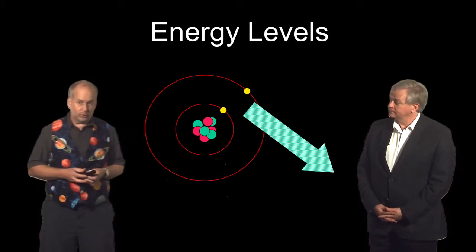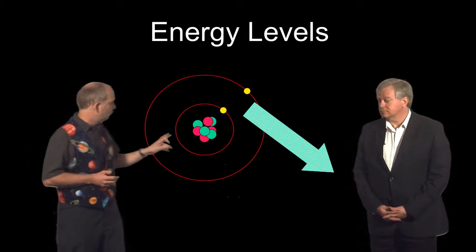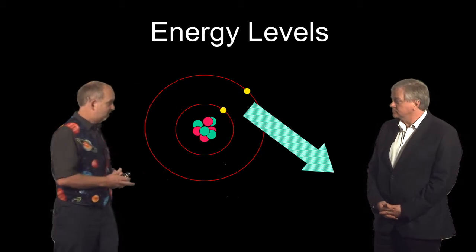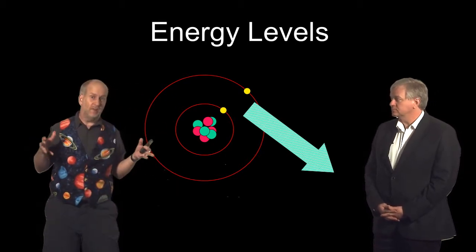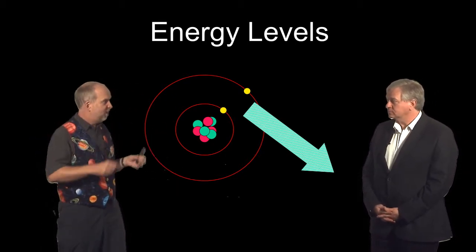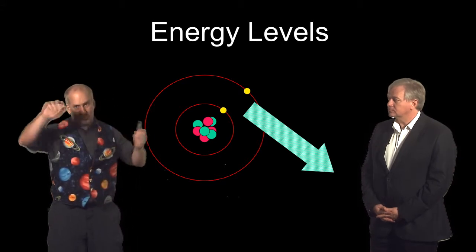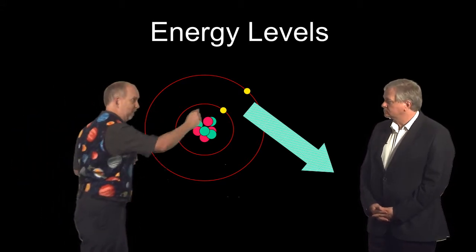If you remember in the earlier parts of this course, we've talked about how electrons can't have any energy they like around an atom because they're basically probability waves. Like any waves on a guitar string, they can have one oscillation, two oscillations, three oscillations when they're confined, which correspond to different energy levels.